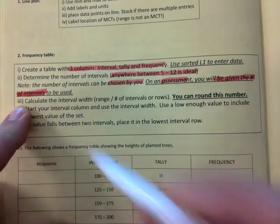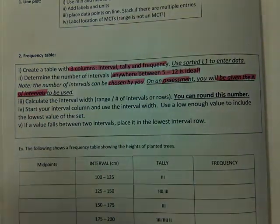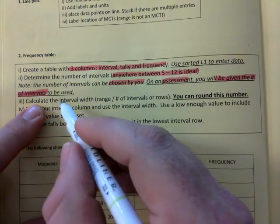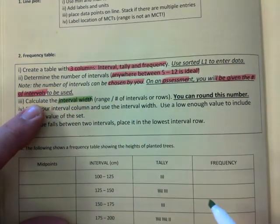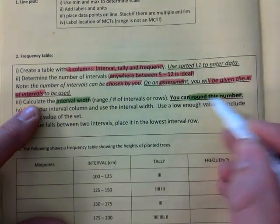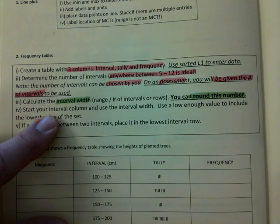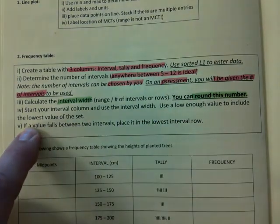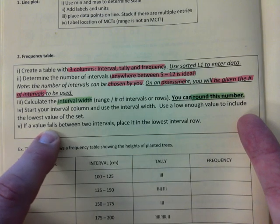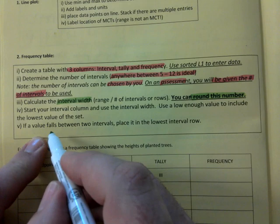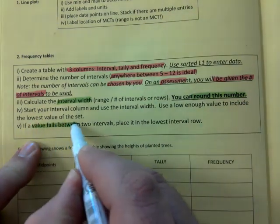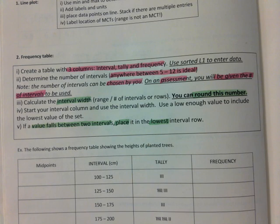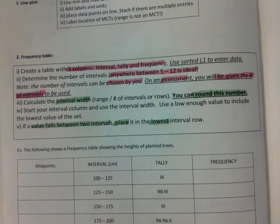So you don't have to guess there because it's just more complicated to mark it. Calculate the interval width. You need to have that. You can round this number. Start with your interval column using the interval width. Use a low enough value to include the lowest value of the set. If value falls between two intervals, place it in the lowest. Because sometimes it'll be right in between. You just put it on the lower one and you'll be fine.